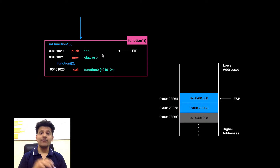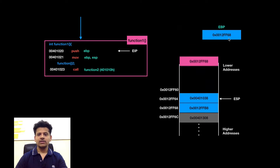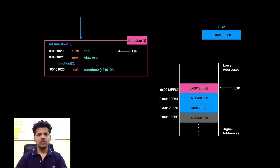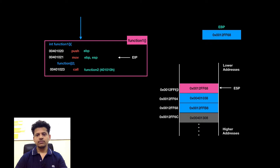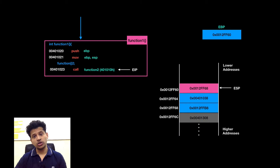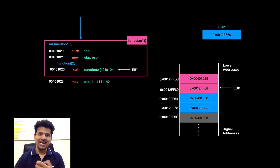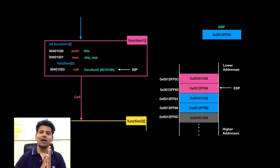Let's see the same thing in animation format for better understanding. We are executing from function 1. The first instruction is push ebp — our ebp is 0012ff68, which will get pushed onto the stack. After that, esp will move into the ebp to start function 1's stack frame. esp got moved into the ebp. The next C program segment is calling function 2; its assembly equivalent is call function 2. For that, we will move the next instruction's address onto the stack so that eip can return to function 1. We are passing control to function 2.